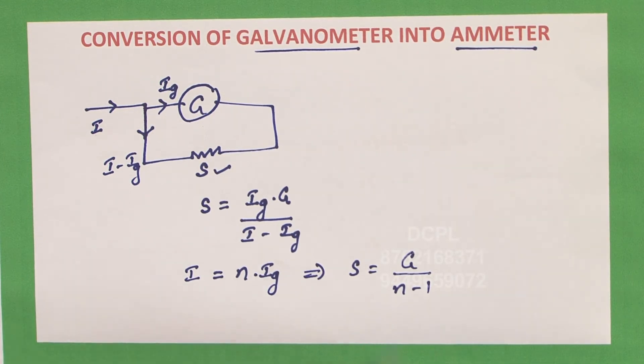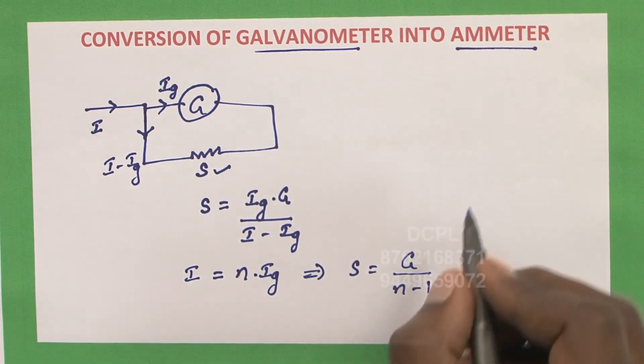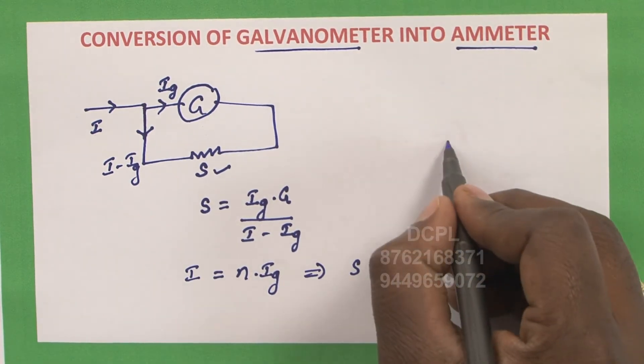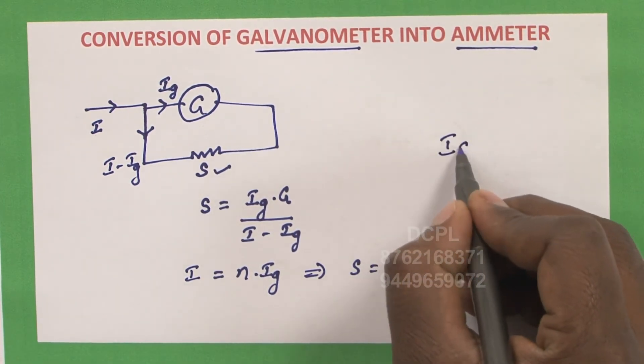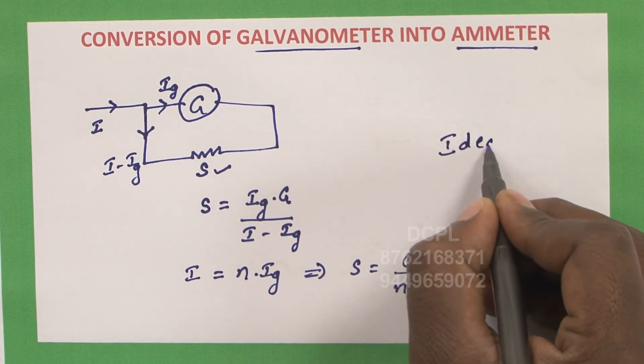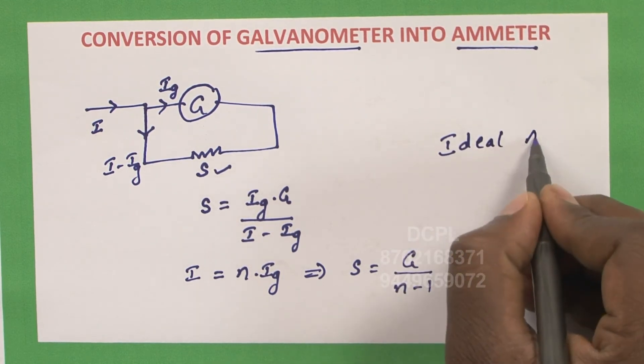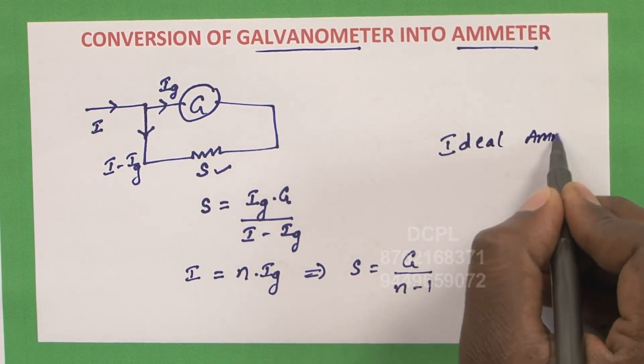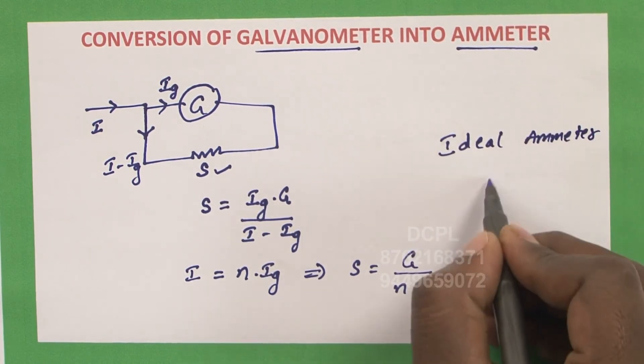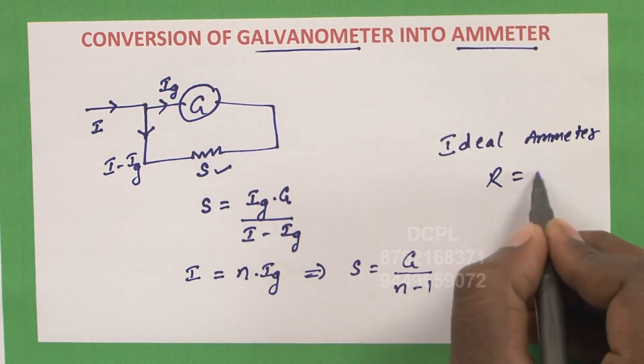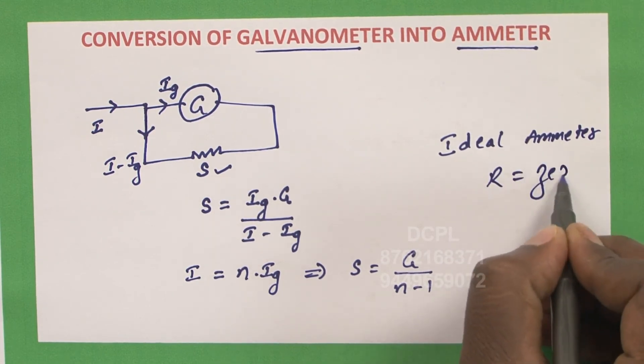The resistance of an ideal ammeter is 0.